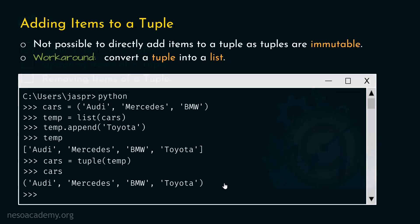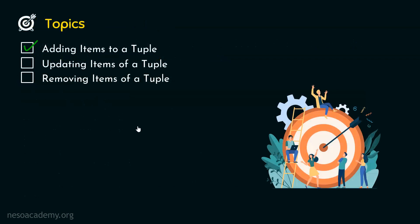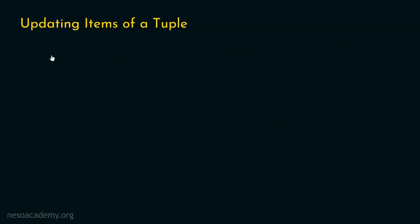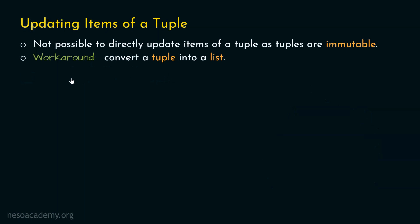Now let's move on to the next topic: updating items of a tuple. We know it is not possible to directly update items of a tuple, as tuples are immutable. But there is a workaround. We can first convert a tuple into a list, then update the item we want, and then convert that list back to a tuple.